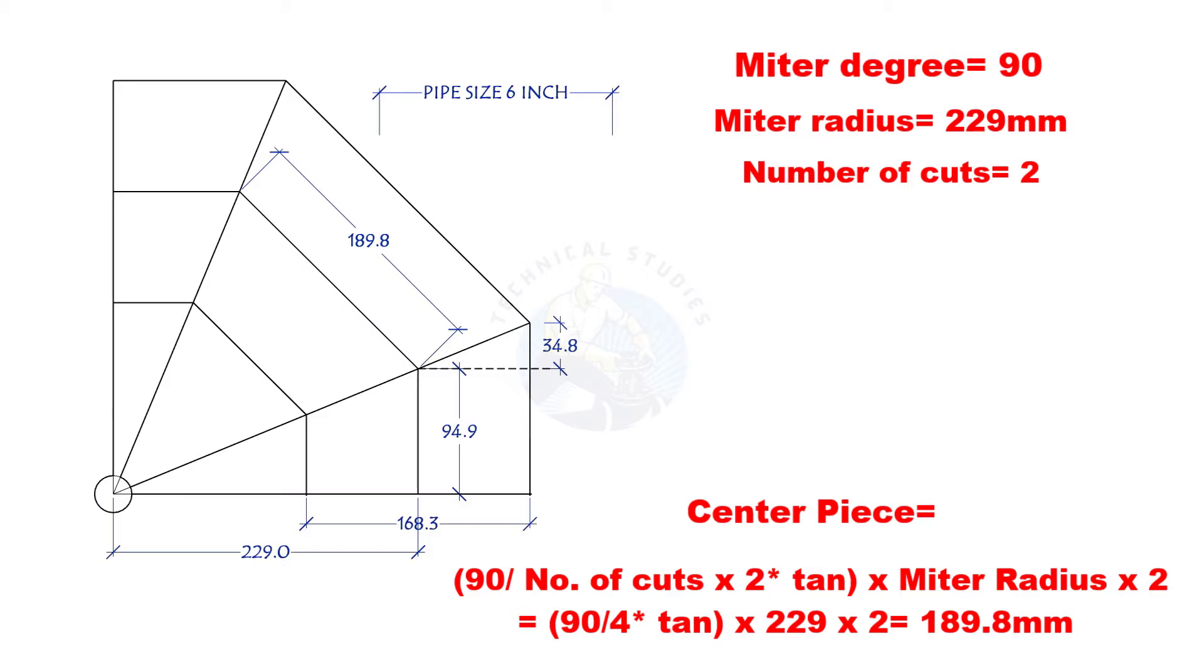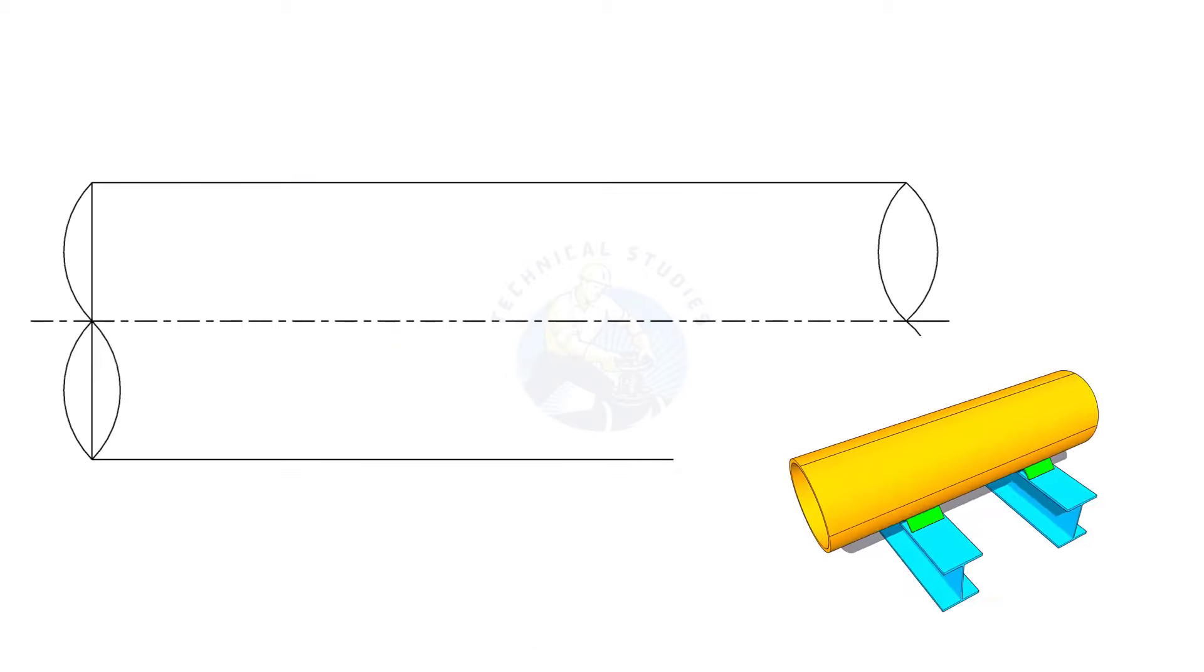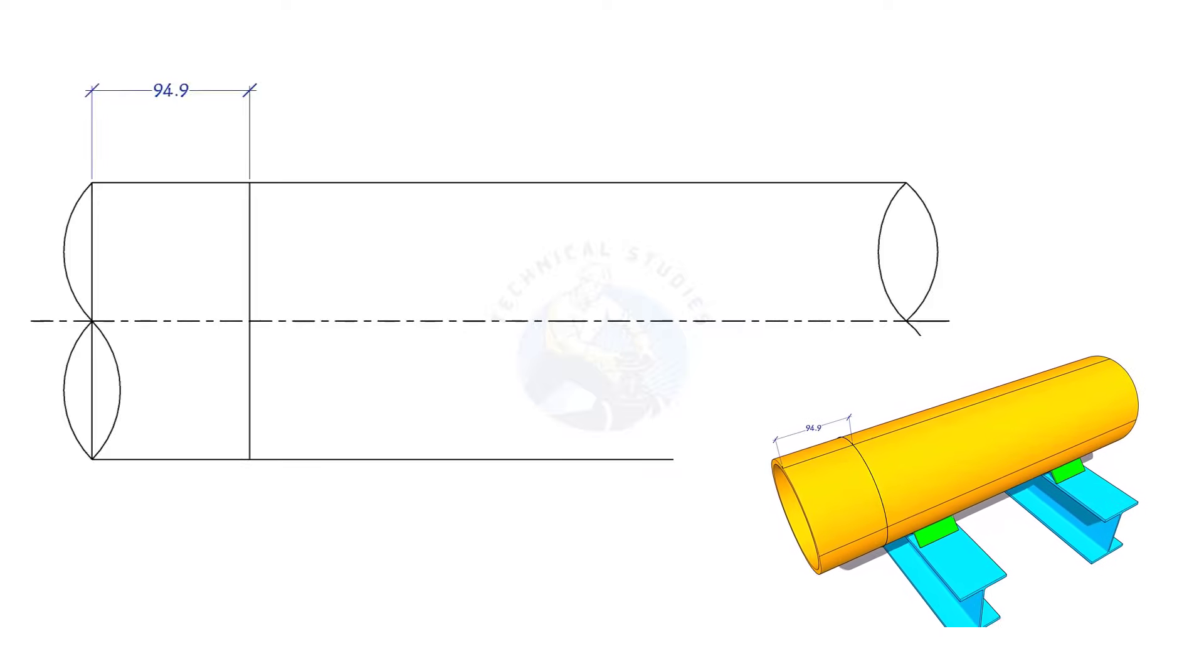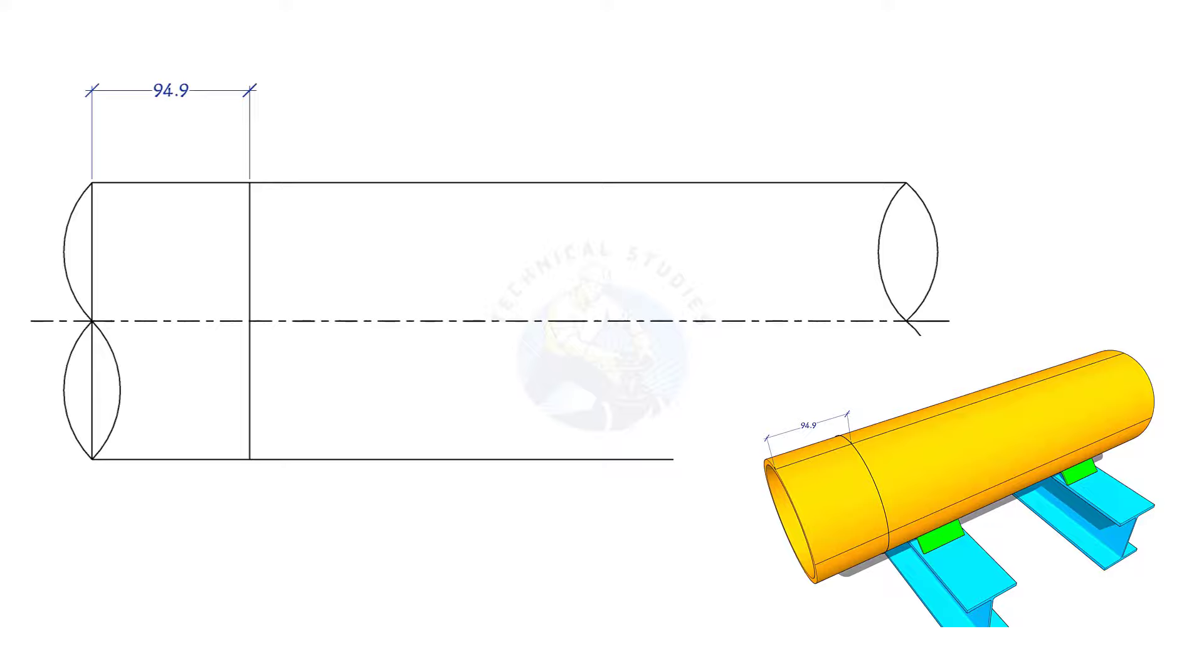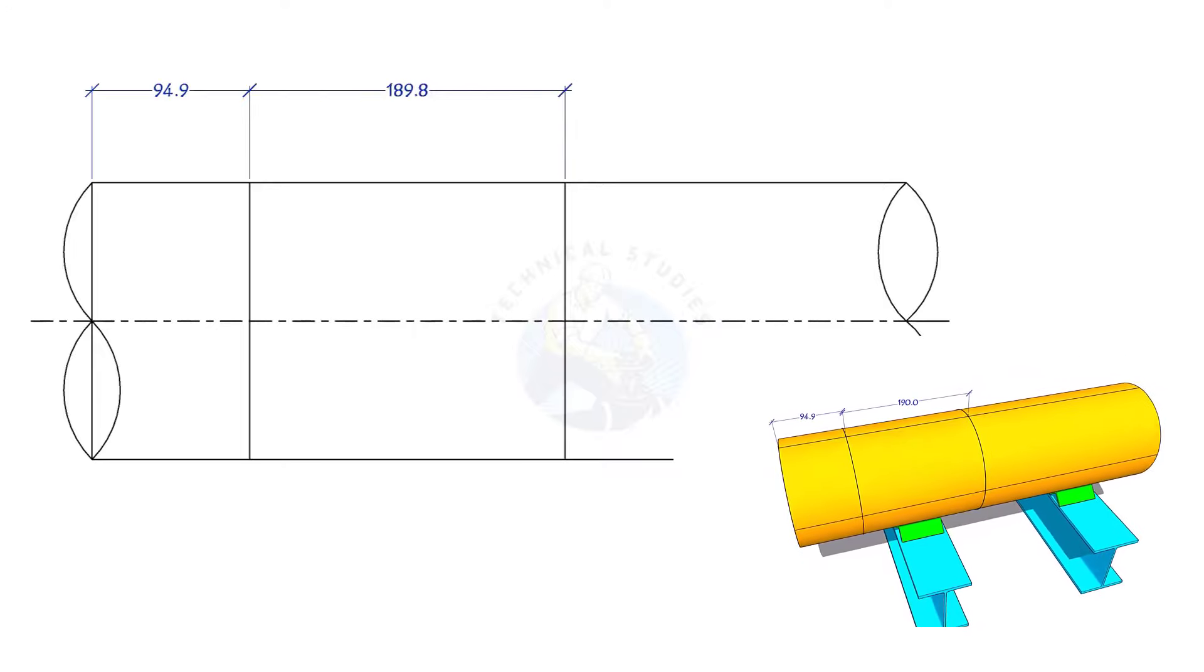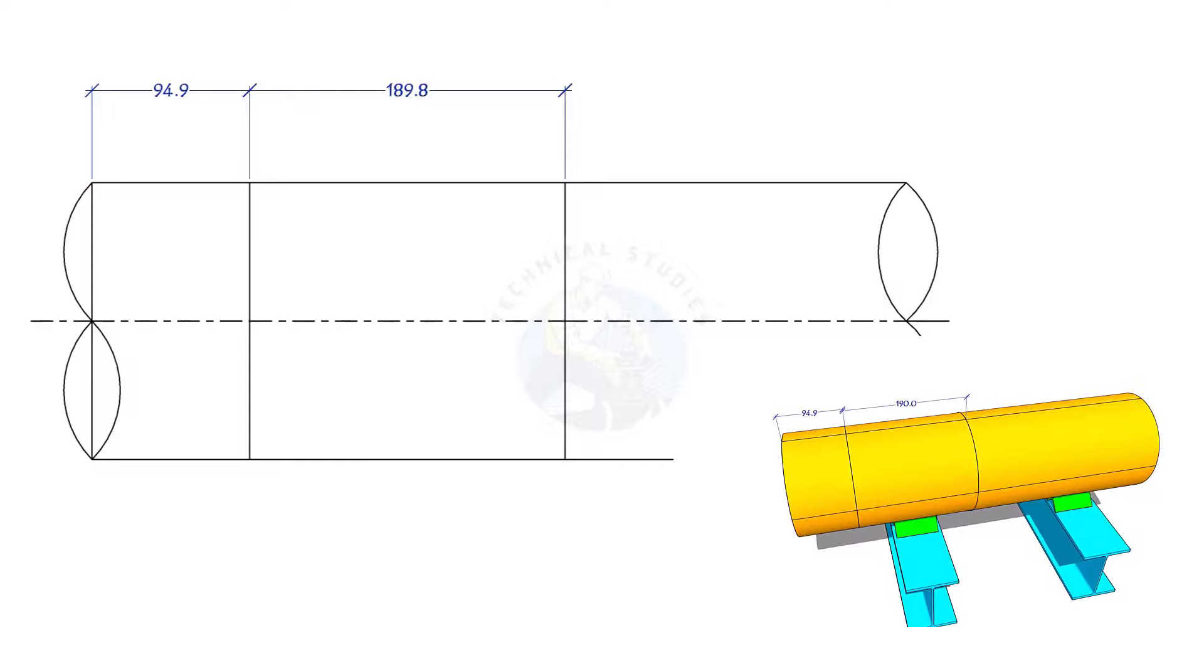Let us mark it on a pipe. Draw four equally spaced lines on the pipe. Mark the end part length, then the middle part and the other end part length as shown.